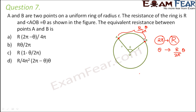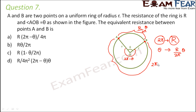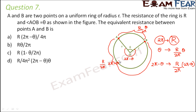This is the resistance corresponding to one arc. Now when we say equivalent resistance between points A and B, that doesn't mean only this one arc — it also includes the other arc. The angle for the other part is 2π minus theta. So the resistance corresponding to this other arc would be R divided by 2π, multiplied by (2π − θ).